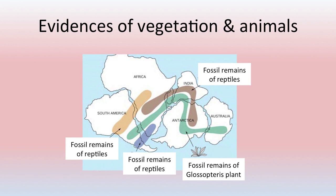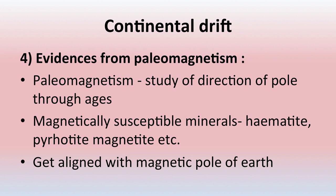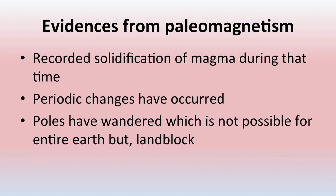Fossil remains found similar across these continents also show that they may have been together in the past. The fourth evidence is from paleomagnetism — the study of the direction of poles through ages. Magnetically susceptible minerals like hematite, pyrotite, and magnetite get aligned with the magnetic pole of the earth, recording solidification of magma. Poles have wandered, which is not possible for the entire earth as a whole, but is possible for land blocks — showing that some land blocks have shifted from their original places.